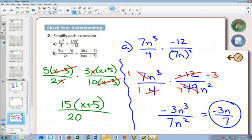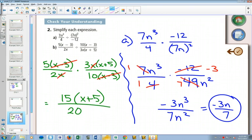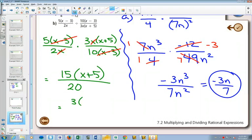Now, you could look at the numbers, 15 over 20. Can you simplify that? Yes. That simplifies to 3 over 4. And that is simplified completely.